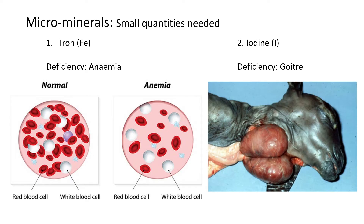This is quite bad for the animal itself. Anemia can also lead to organisms bleeding out — they struggle to heal if they get wounded, and most probably that wound will not heal. The second mineral is iodine, with the symbol I. If there's an iodine deficiency, it causes goiter.